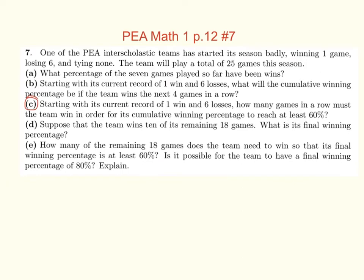C: starting with its current record of one win and six losses, so one out of seven. How many games in a row must the team win in order for its winning percentage to reach at least 60%? Now this one, I think we did the first time, was a lot of guessing and checking. Somebody just guessed, what if we win five in a row? That would be six out of 12, which is 50%, so that's not good enough. And you keep on trying that over and over again.